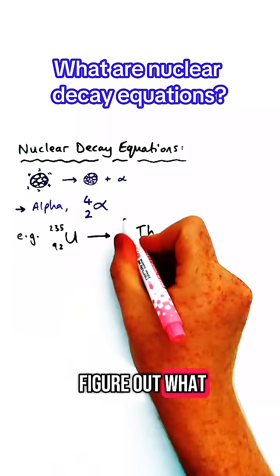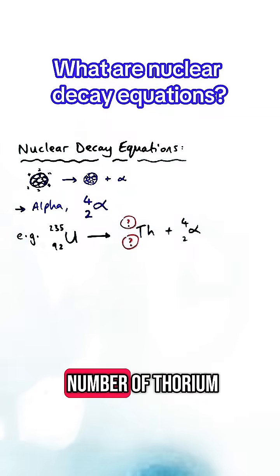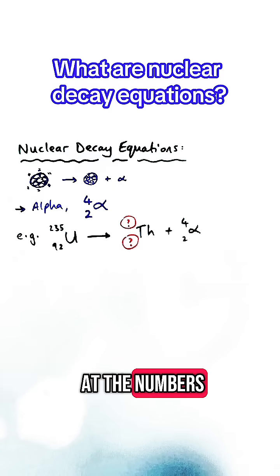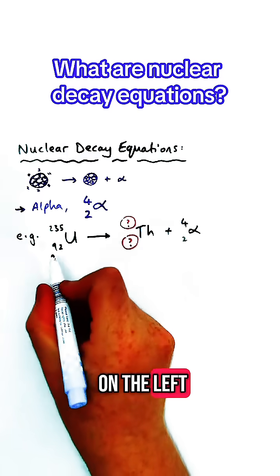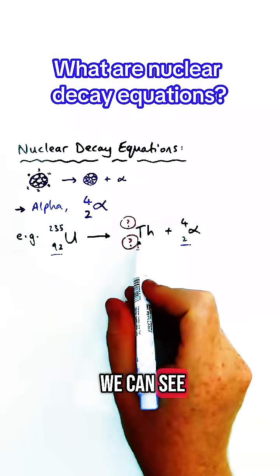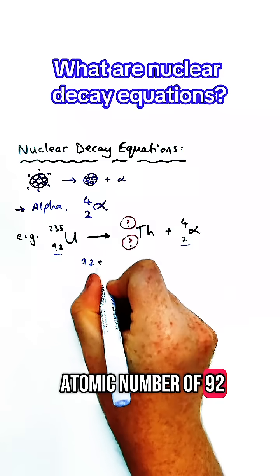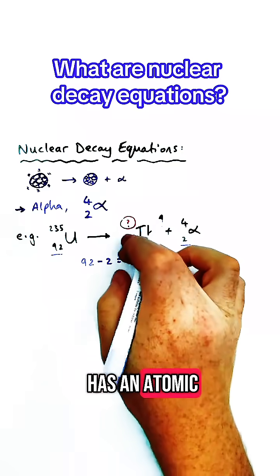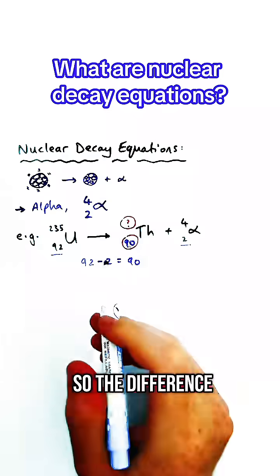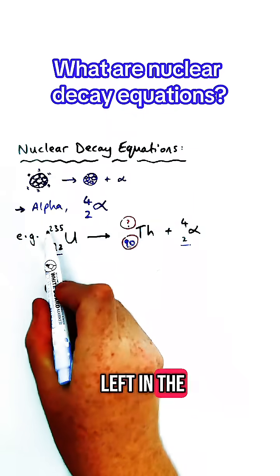A nuclear decay equation looks something like this. So can you figure out what the missing numbers are for the atomic number and mass number of thorium? If we look at the numbers of the atomic number and mass number on the left and right-hand side, we can see that uranium starts off with the atomic number of 92, and an alpha particle has an atomic number of 2. So the difference between those numbers must be what's left in the thorium atom, and that happens to be 90.